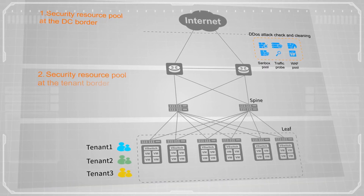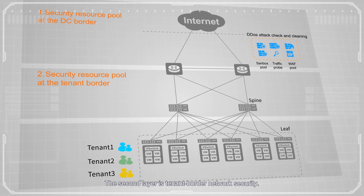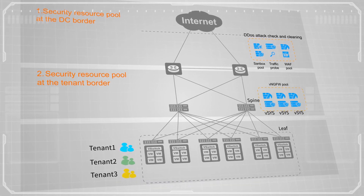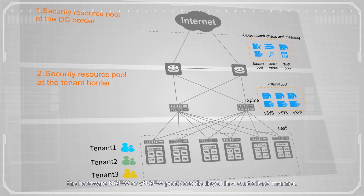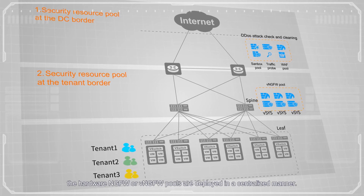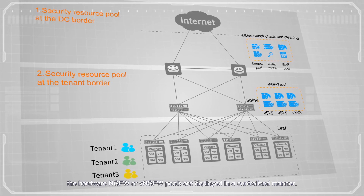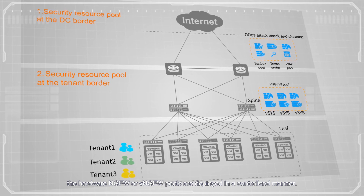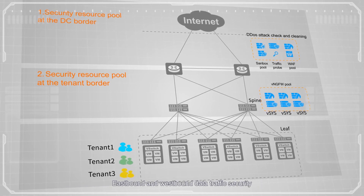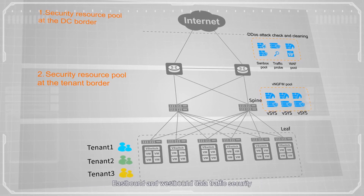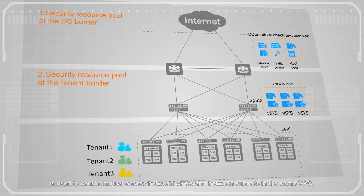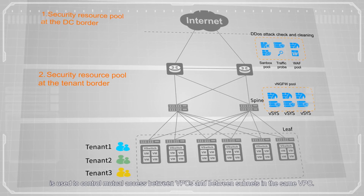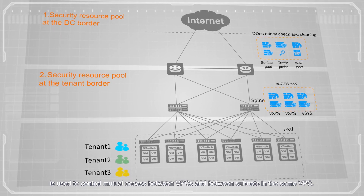The second layer is tenant border network security. Generally, the hardware NGFW or VNGFW pools are deployed in a centralized manner. Eastbound and westbound data traffic security is used to control mutual access between VPCs, and between subnets in the same VPC.